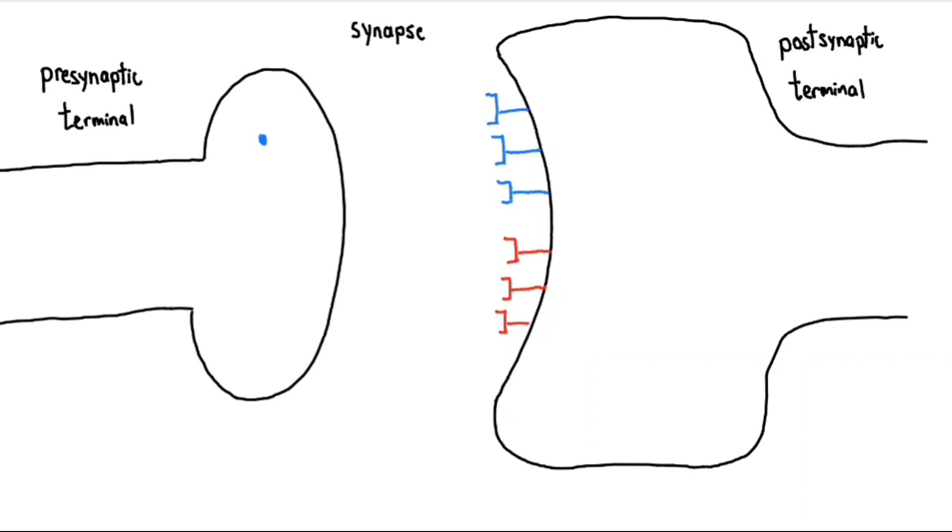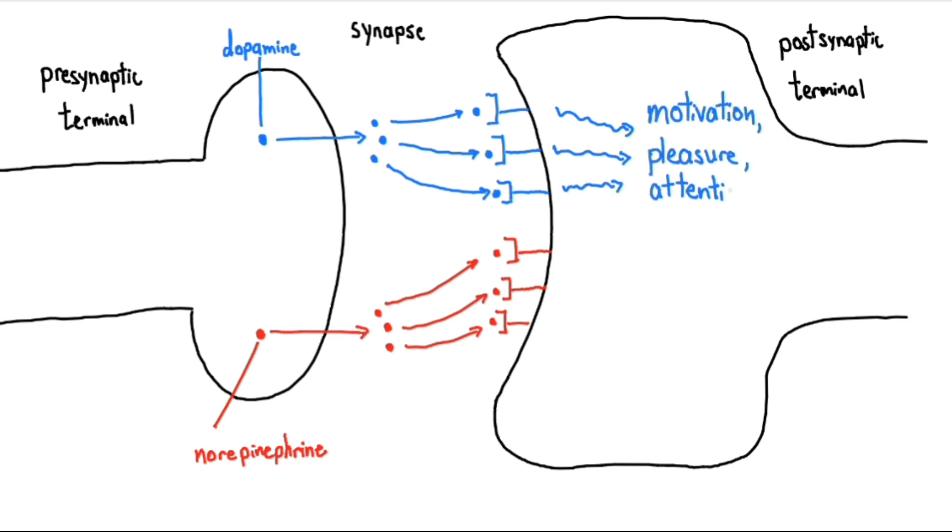In a typical neuron, dopamine and norepinephrine is released into the synapse from the presynaptic terminal, and these neurotransmitters bind to their receptors on the postsynaptic terminal. Dopamine is a neurotransmitter associated with motivation, pleasure, and attention.